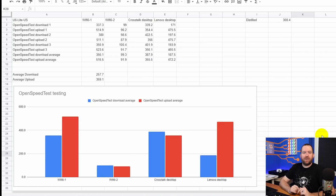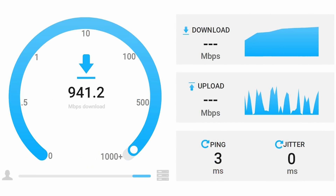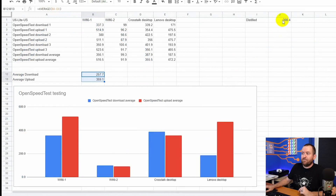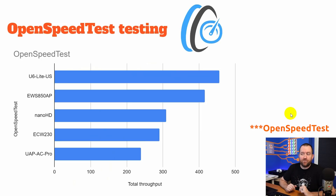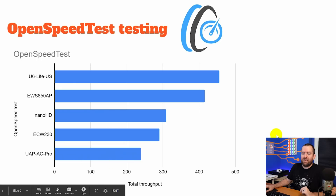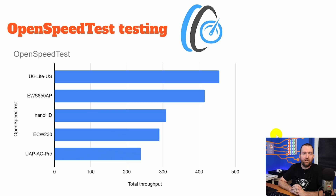Next, let's take a look at our OpenSpeedTest methodology. I ran speed tests against OpenSpeedTest from every single one of these clients — three times each — then took the average upload and download for every client, and averaged those to get my distilled metric for the final benchmark. In the OpenSpeedTest results, the U6 Lite blew the doors off of everything else, coming in at about 450 megabits per second. The EWS850AP was just over 400 megabits per second, followed by the Nano HD in third. Fourth place was the Ingenious ECW230, and in last place was the UAP-AC Pro at just about 240 megabits per second.